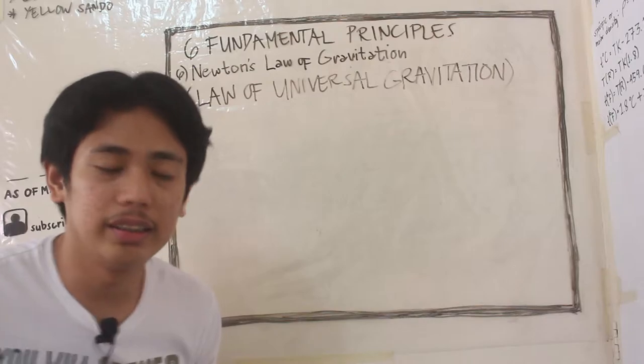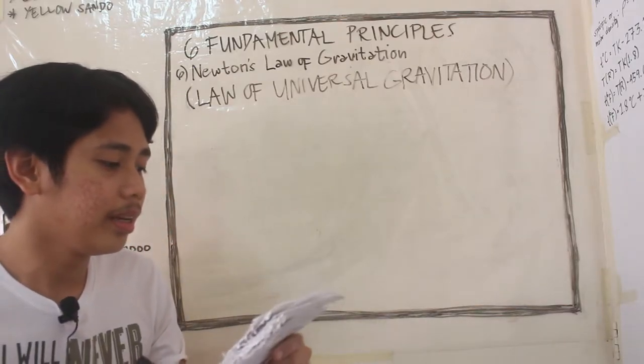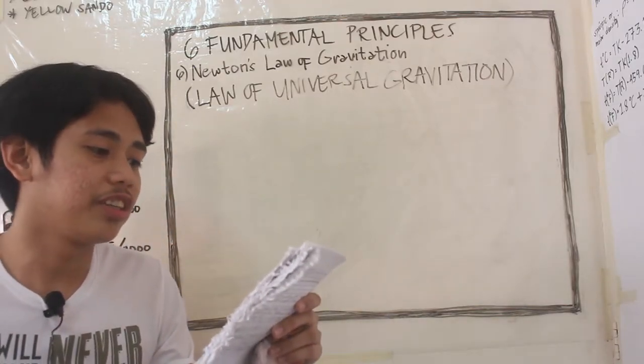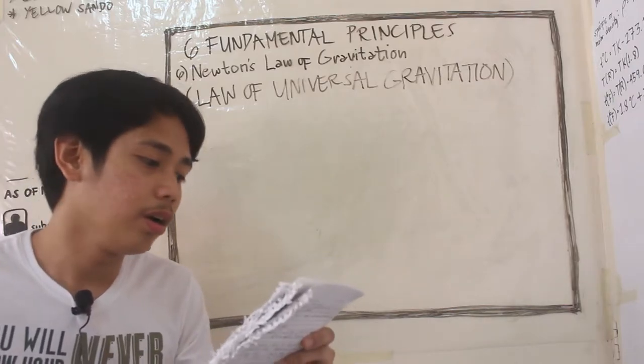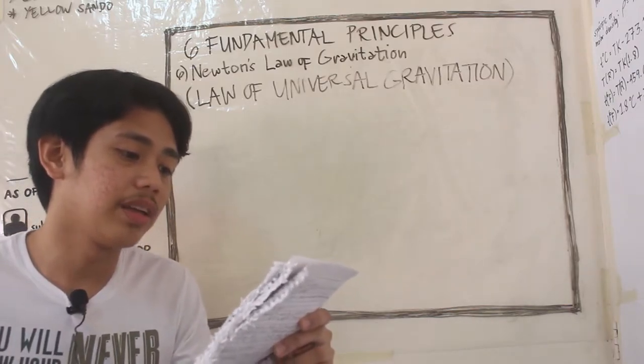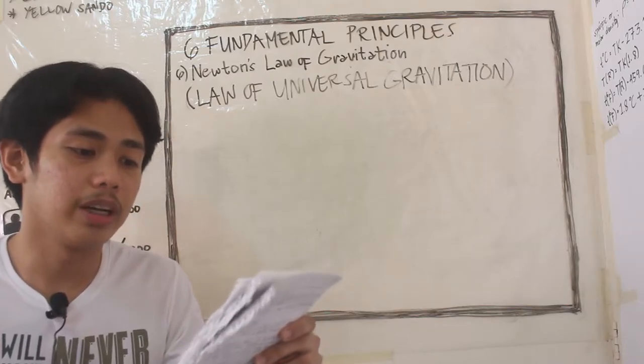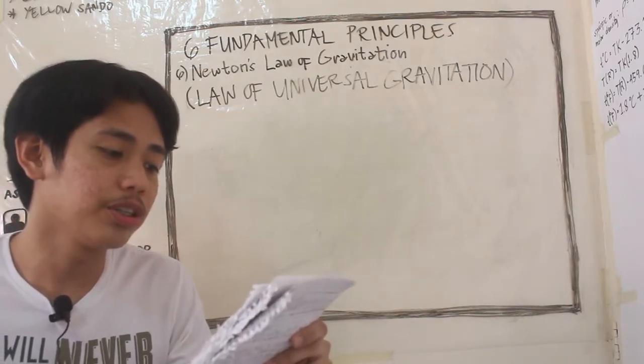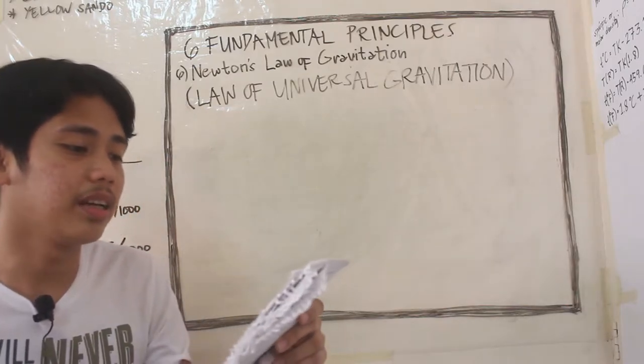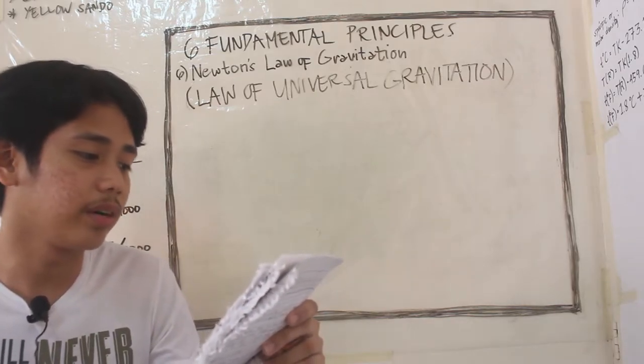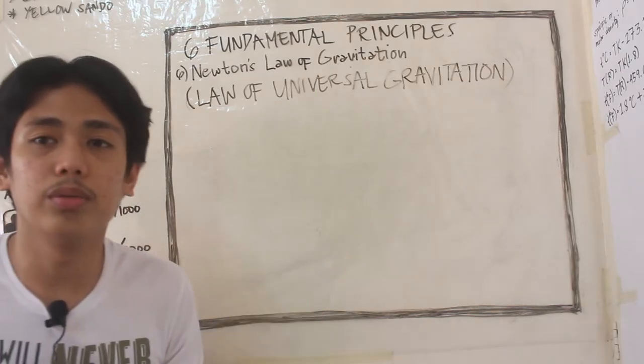It states that every object in the universe attracts every other object with a force directed along the line of centers from the two objects, that is proportional to the product of their masses and inversely proportional to the square of the separation between the two objects.